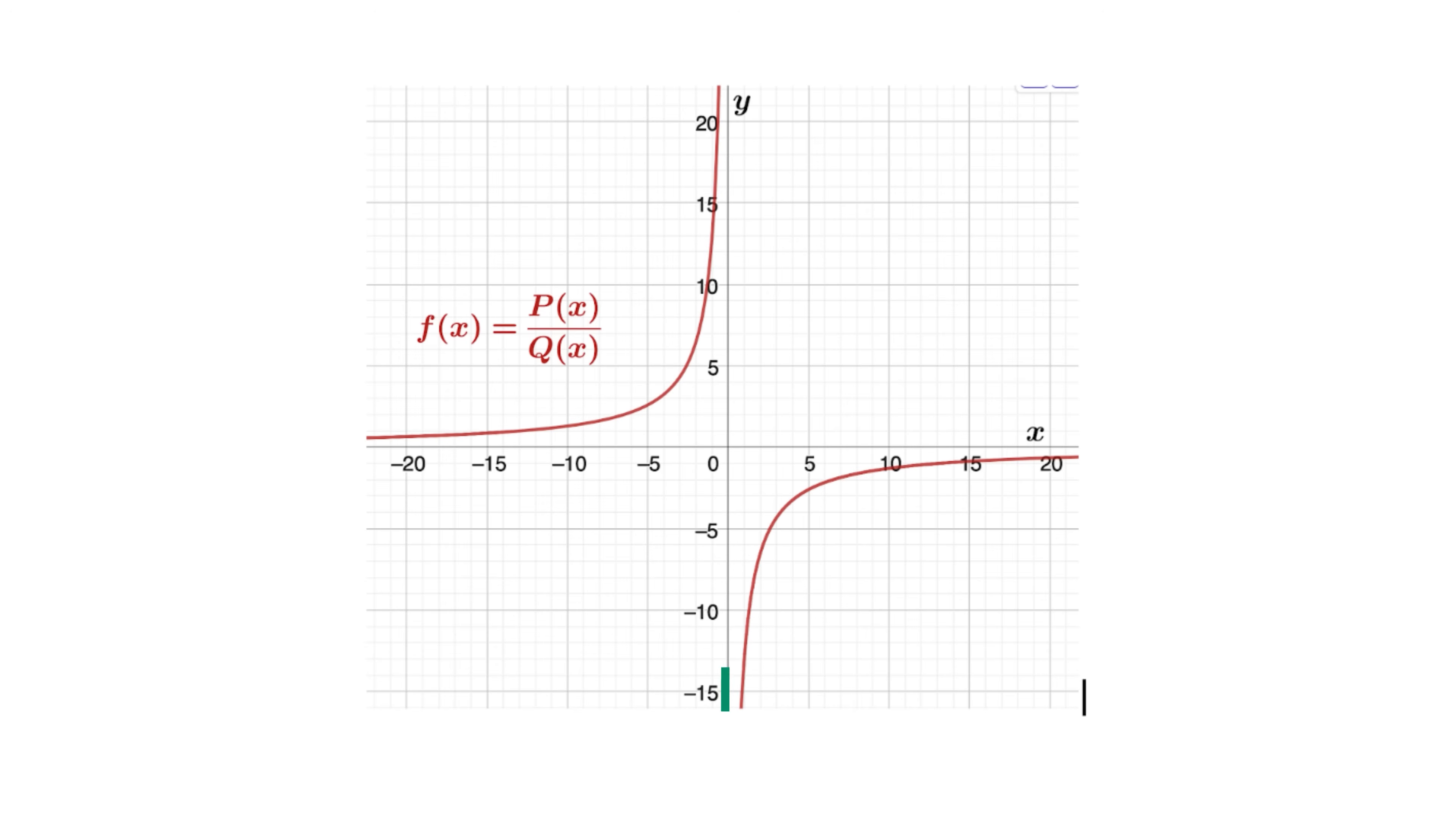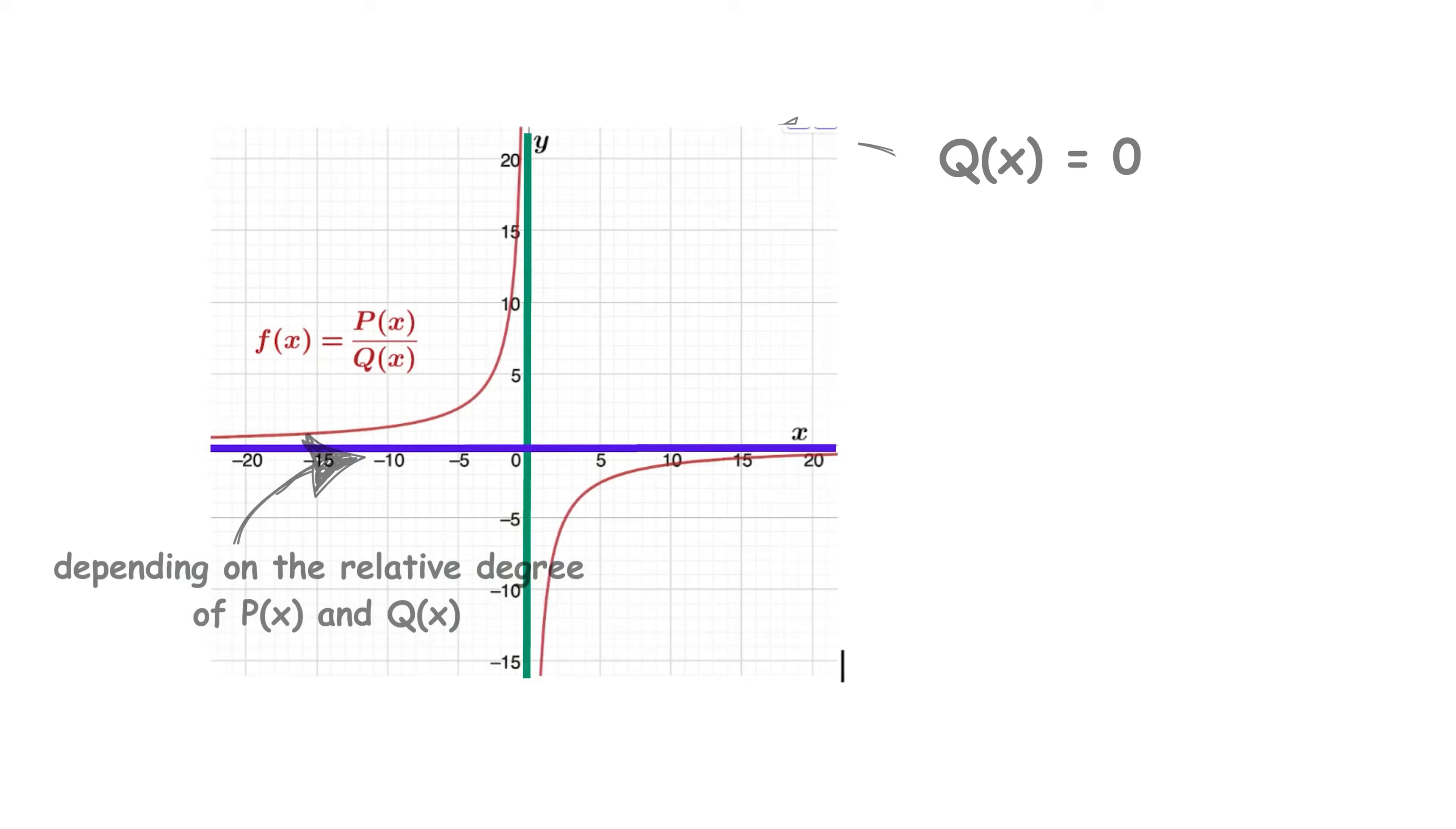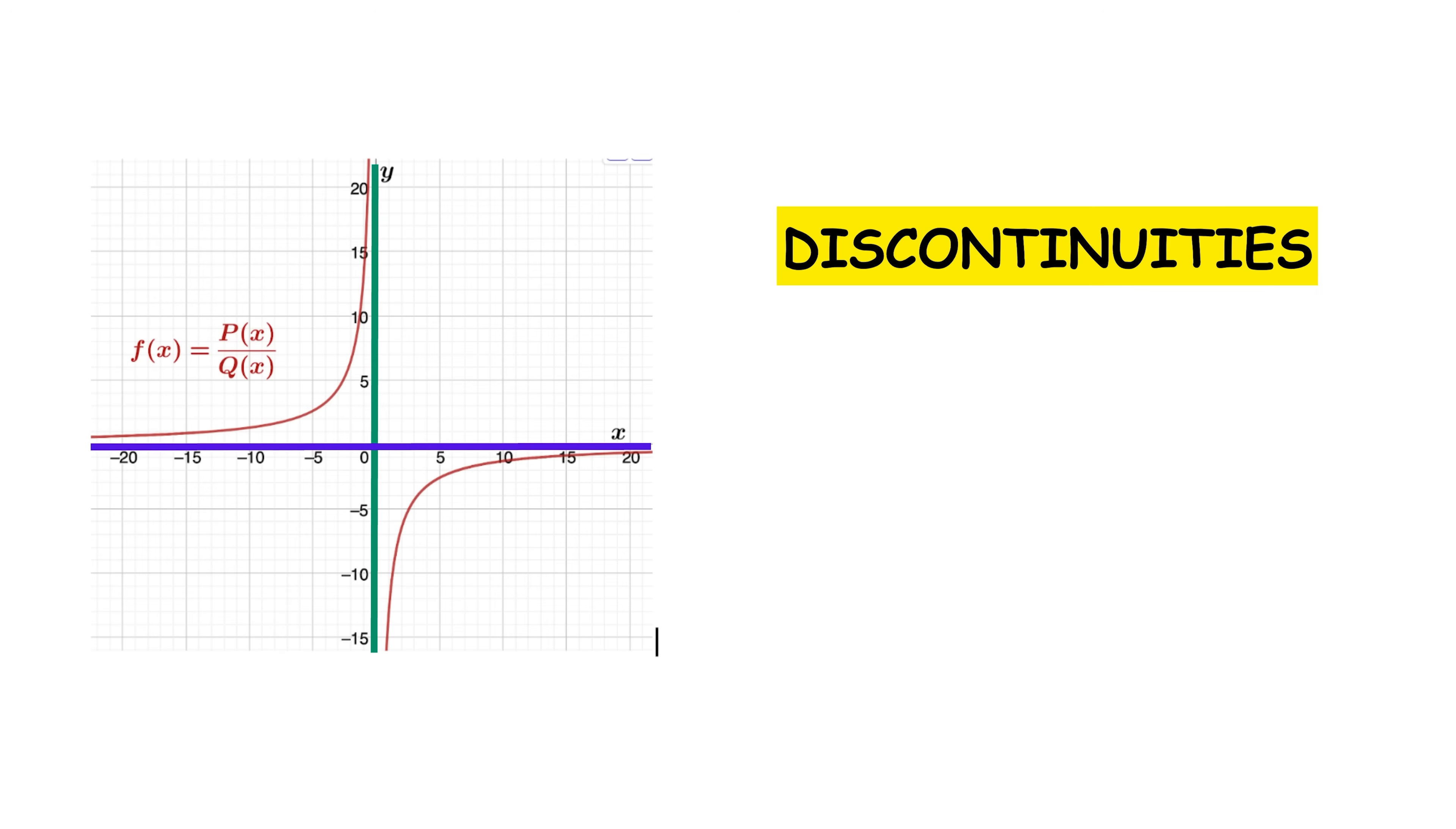They can present vertical asymptotes, where q of x is 0, and horizontal or oblique asymptotes, depending on the relative degree of p of x and q of x.